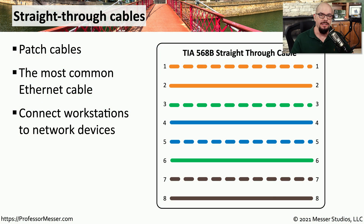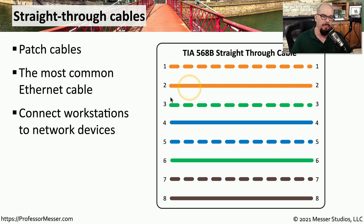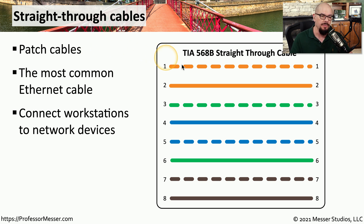When we're connecting ethernet devices, we're commonly using a straight-through cable. This means that the wire on pin 1 on one side is connecting to pin 1 on the other side, pin 2 to pin 2, pin 3 to pin 3, and so on. You'll sometimes hear this referred to as a patch cable, because this is the cable we use inside of a wiring closet to patch from a patch panel into an ethernet switch. It's probably the cable being used on your computer, and it's most commonly used to connect workstations to network devices such as switches.